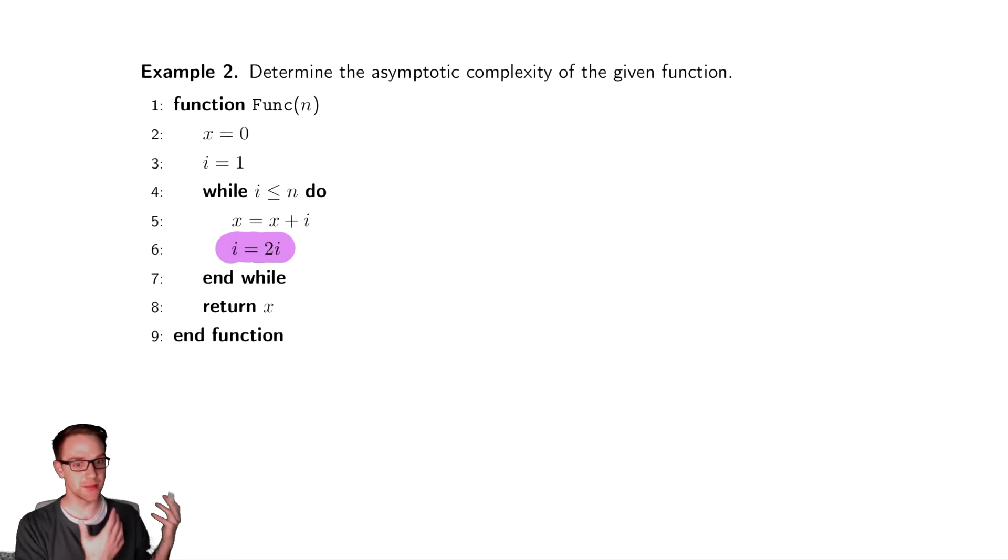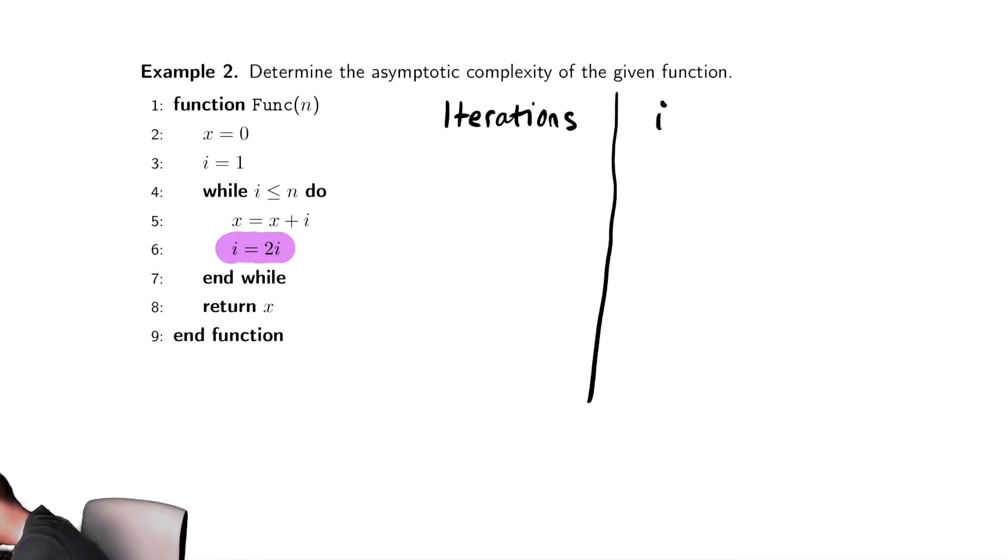So just as we saw with our previous example, let's begin by trying to write that table that captures how does i relate to the number of iterations of the while loop. So we want to keep track of the number of iterations, which I'm just going to label as iterations, and the value of i, which I'm just going to label with an i.